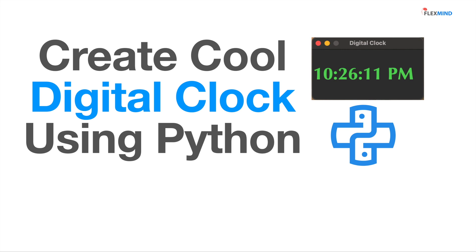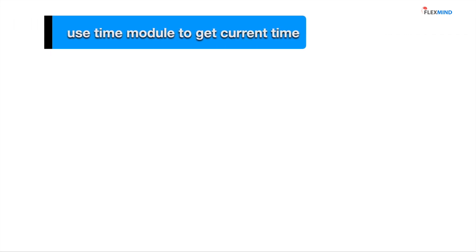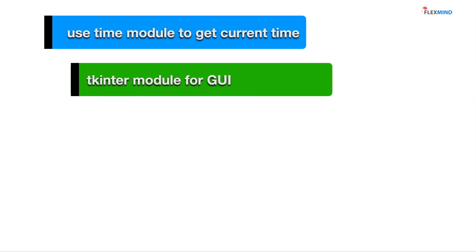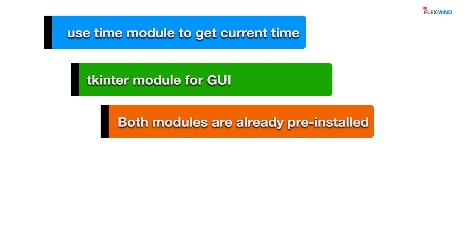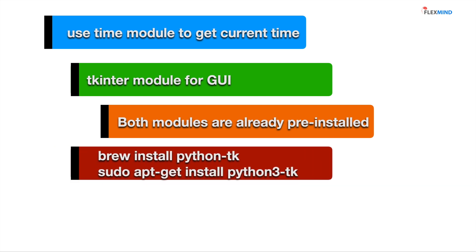Before starting the code, you need a time module to get the current time from your system, and then you need the tkinter module for GUI development. Both of these modules are already pre-installed, but in some cases tkinter may say it is not installed.